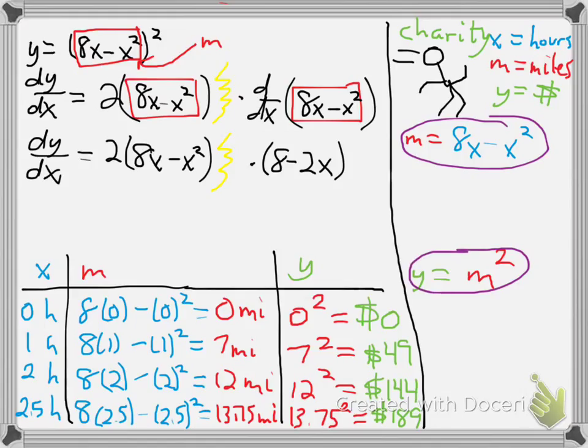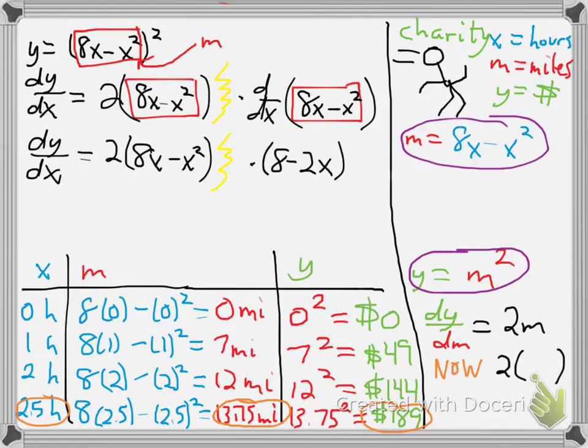You want to know how many dollars you're making per hour. So it's got to have to do with dollars. The y must be involved. So why don't we take our derivative of this equation down here. It'll be called dy over dm, because y is isolated in terms of m. The derivative of y with respect to m, the derivative in other words of m squared, is 2m. But what we really want to know is what is the derivative right now, at this moment, two and a half hours into the race, 13.75 miles in after you've raised $189. And so to figure out the derivative right now, we're going to plug in whatever m is right now. m is the number of miles, which means that we take 2 times 13.75. And that comes out to $27.50.